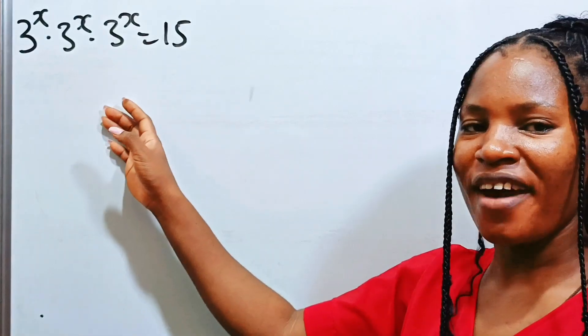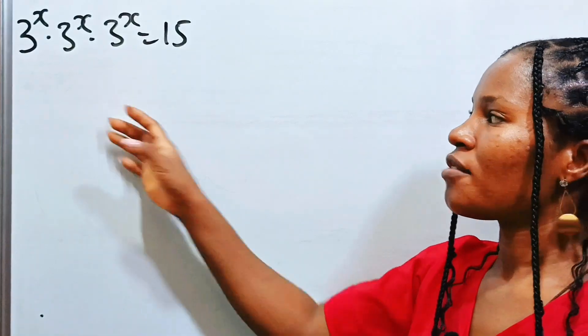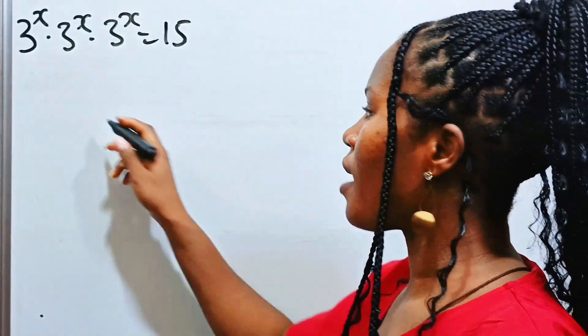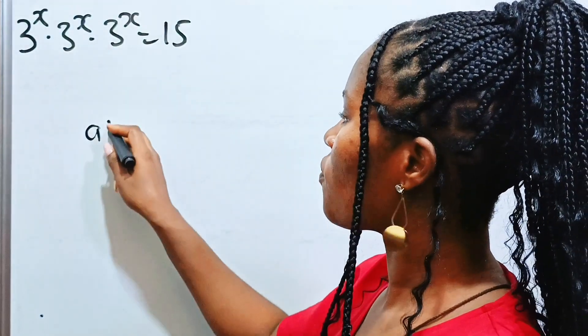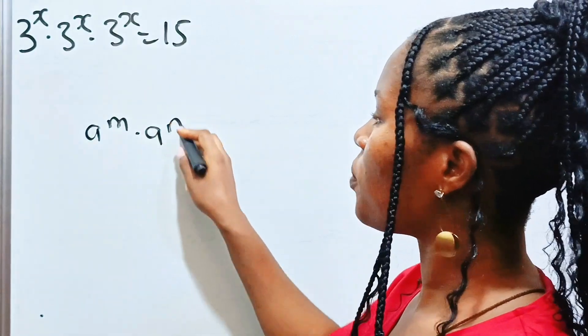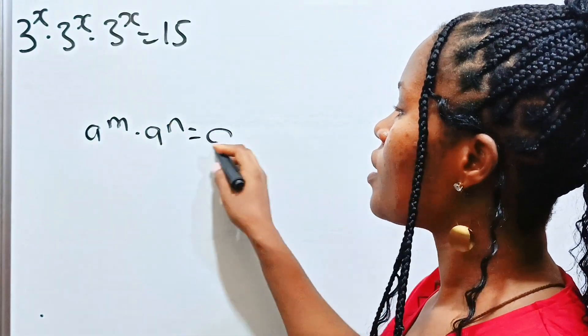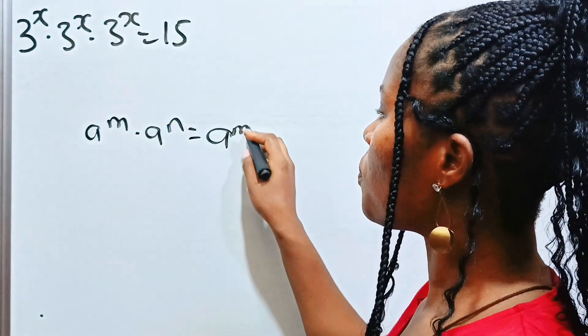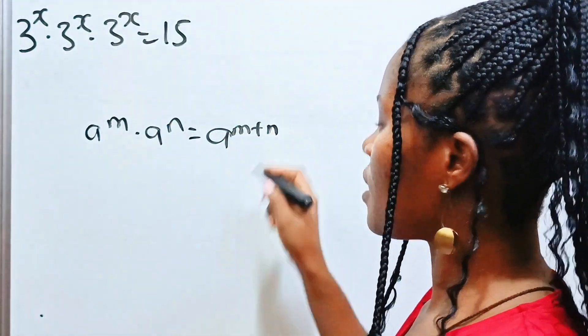Hi, let's solve for x. First, the law of exponents: a to the power of m multiplied by a to the power of n is equal to a to the power of m plus n.